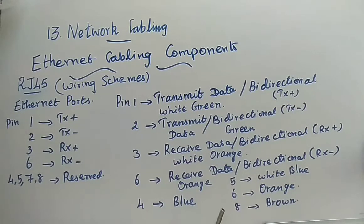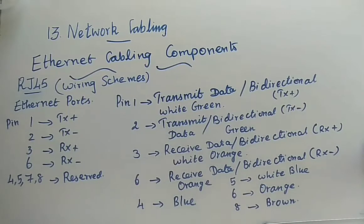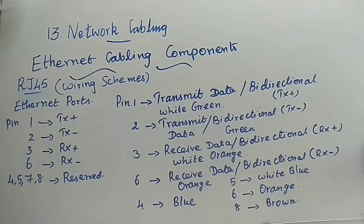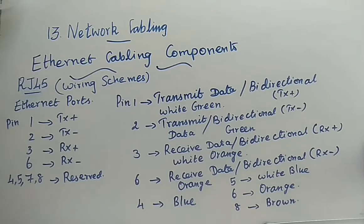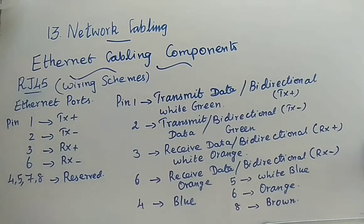In detail, for ethernet ports: pin 1 transmits data — it is bi-directional, transmission positive, and the color of the cable is white-green. Pin 2 also transmits data and is bi-directional, but it is transmission negative. The first end is transmission positive and the next end is transmission negative. The color of the wire for pin 2 is green.